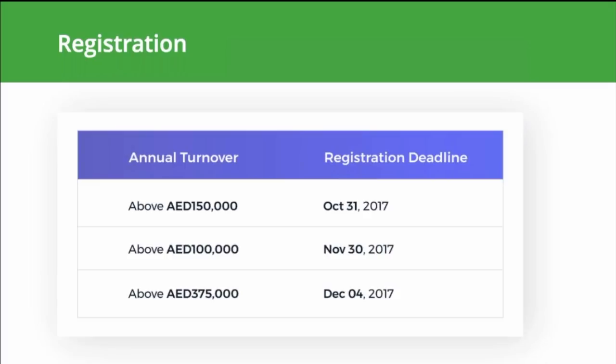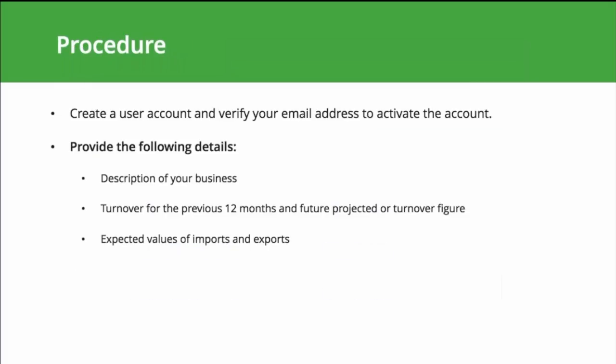New business owners can register under the VAT registration portal on the FTA website. The procedure is simple: you create a user account, verify your email address to activate the account, and provide details such as a description of your business, your turnover for the previous 12 months, future projected or expected turnover figures, and the expected values of imports and exports. Once registration is complete, you will be provided with your tax registration number.